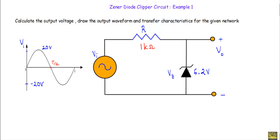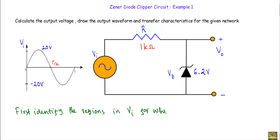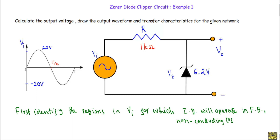When I replace the Zener diode with its corresponding equivalent circuit, I will consider the built-in potential or forward voltage of the Zener diode equal to 0.8 volt. To solve this circuit, we first have to identify the regions in input voltage Vi for which the Zener diode will operate in forward bias, in non-conducting state, and in Zener breakdown region.